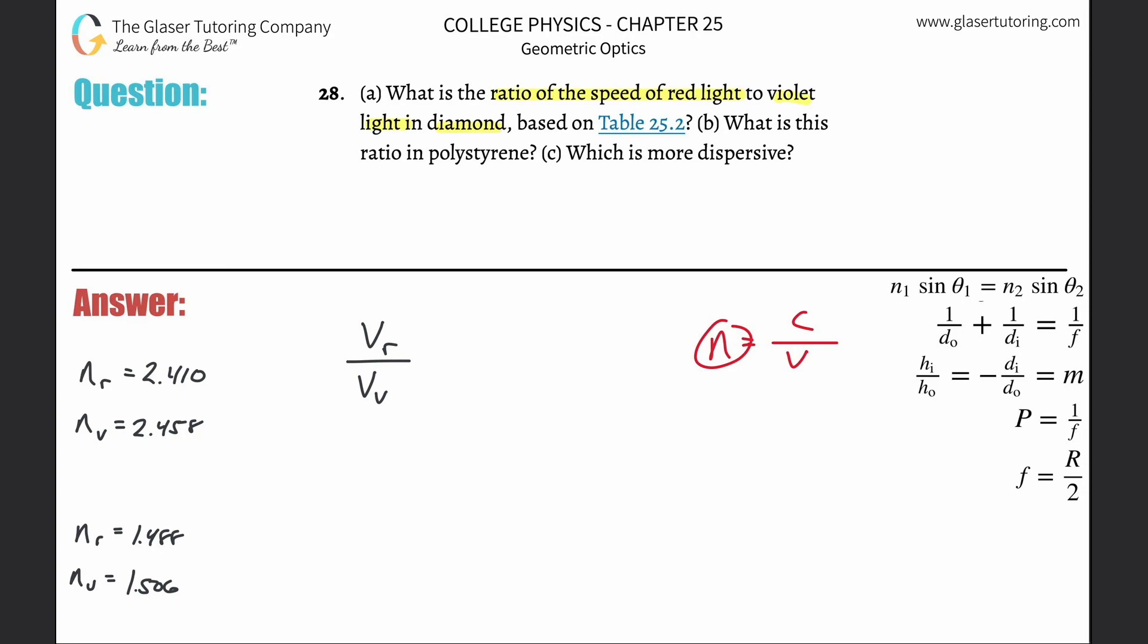So if they tell us the index of refraction for red light in diamond, well, then this would represent the velocity of red light in diamond. And if I wanted to solve this equation for the velocity of red light in diamond, I would get something that looks like this.